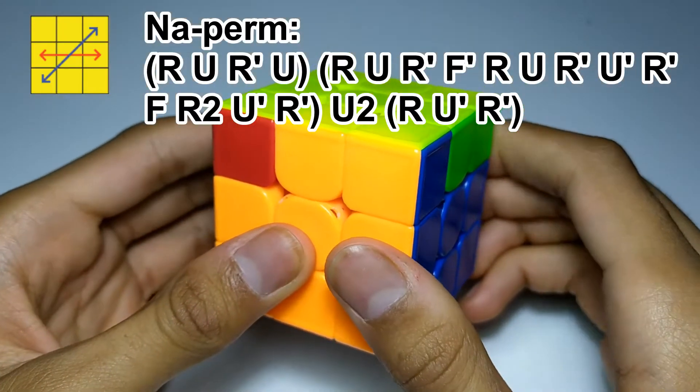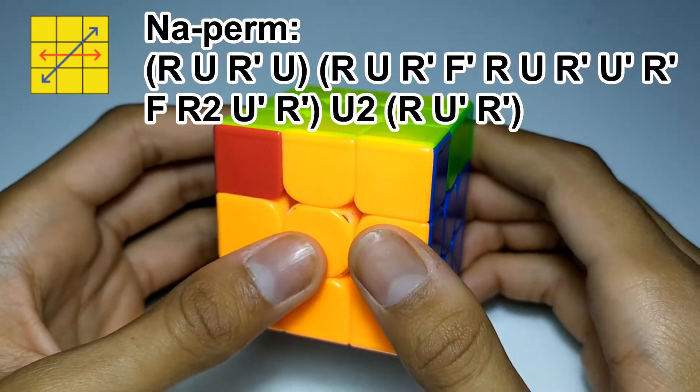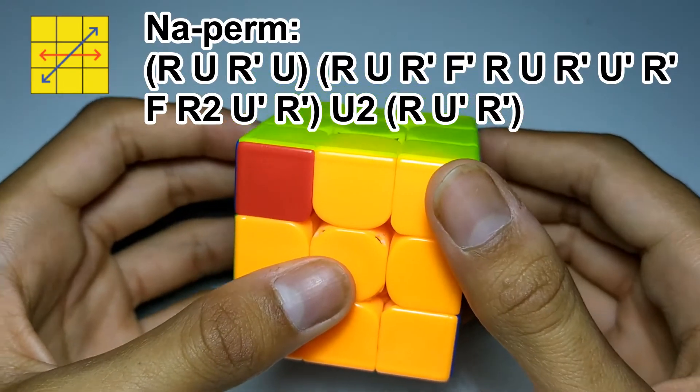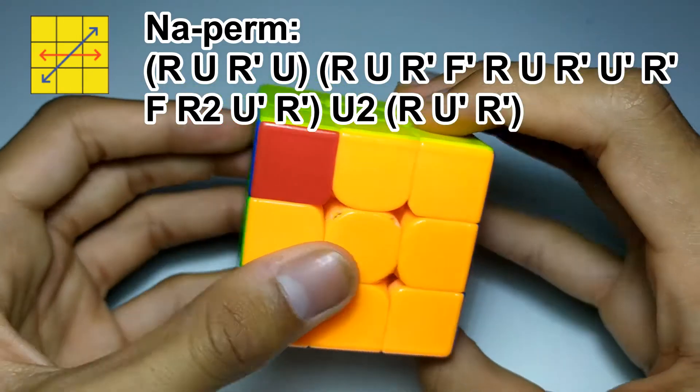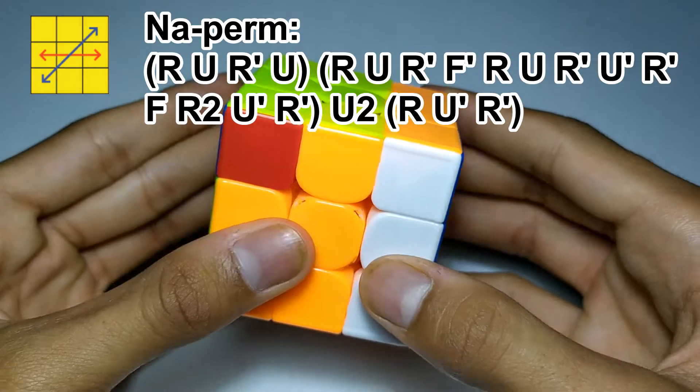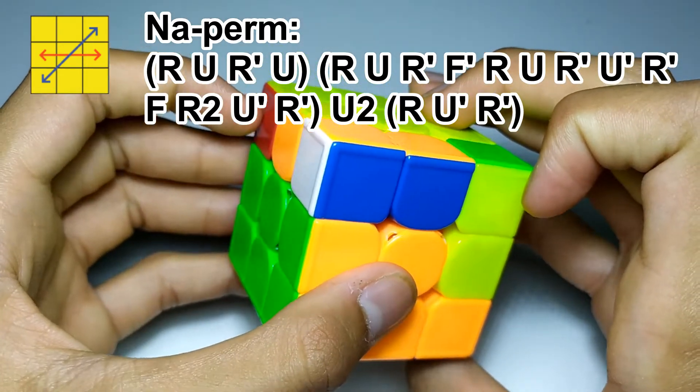So the first algorithm is the N-A-perm. This algorithm is very similar to the J-B-perm. There are two ways of finger-tricking it. The first one, the more basic way, starts with a re-grip, then doing R, U, R' and then U as a push with your left hand.